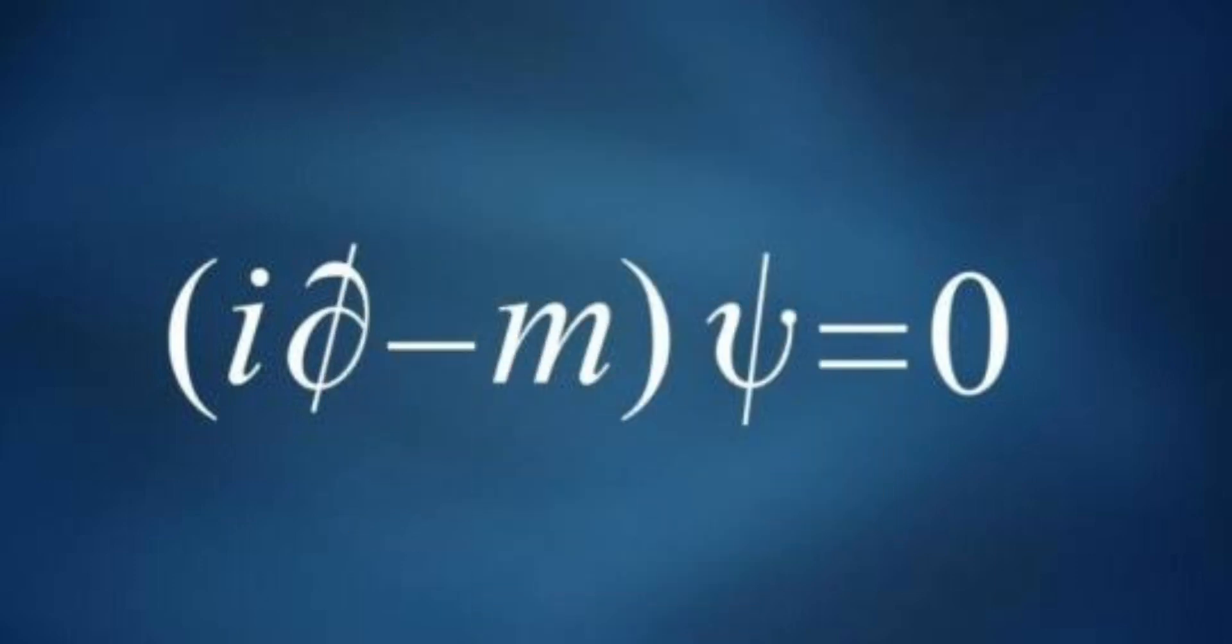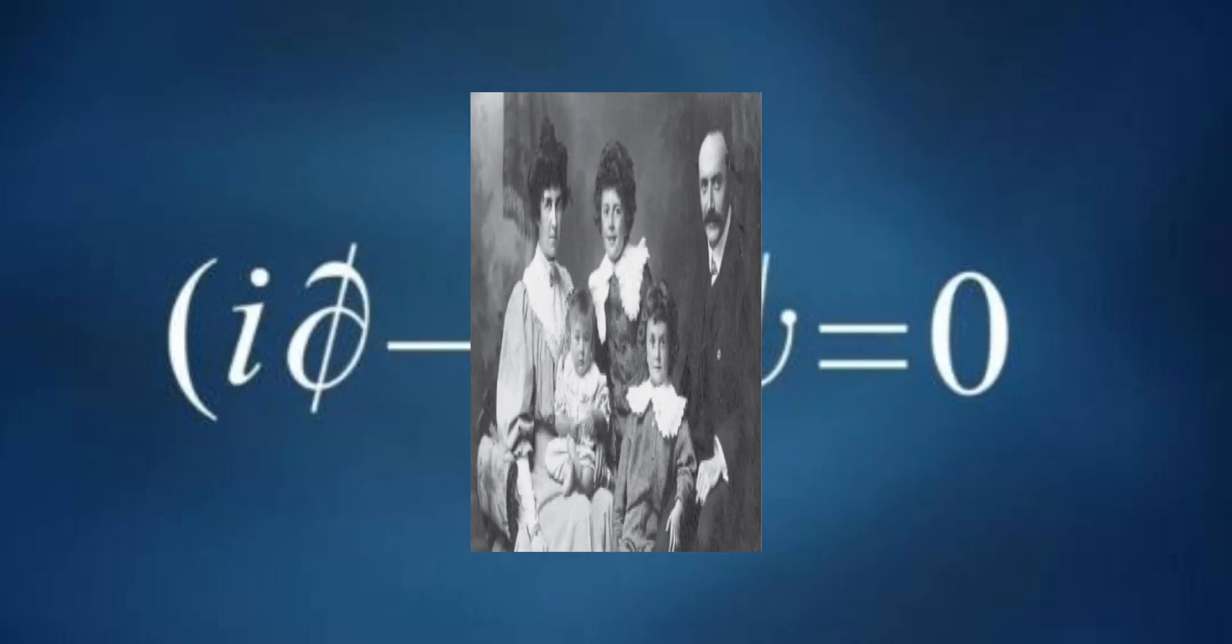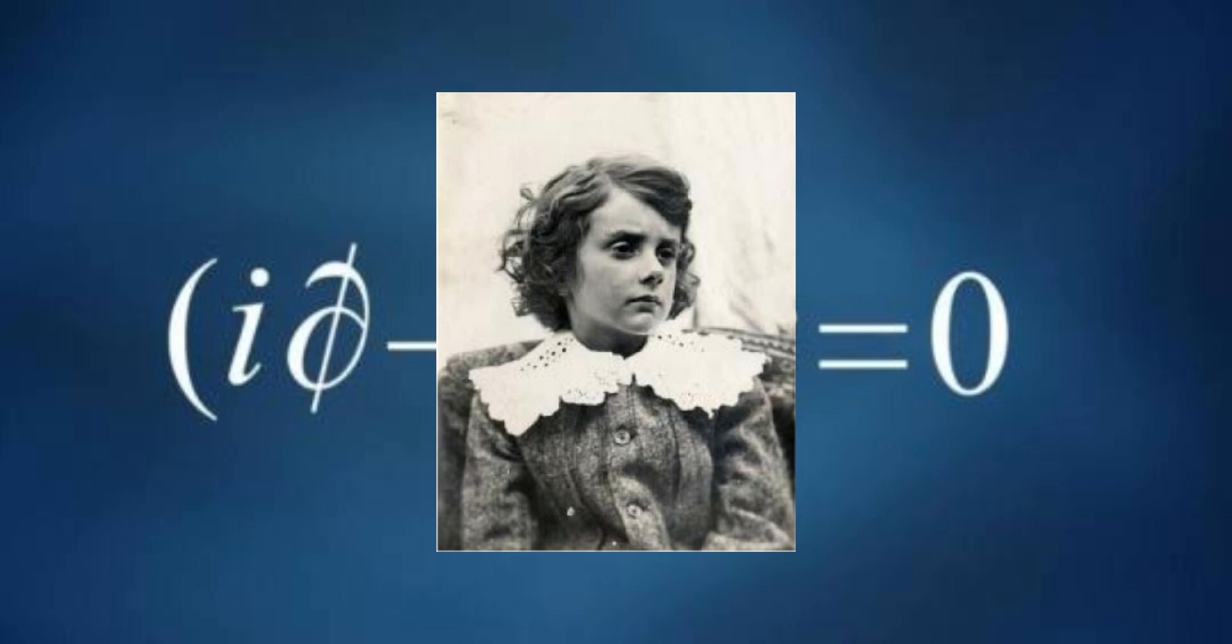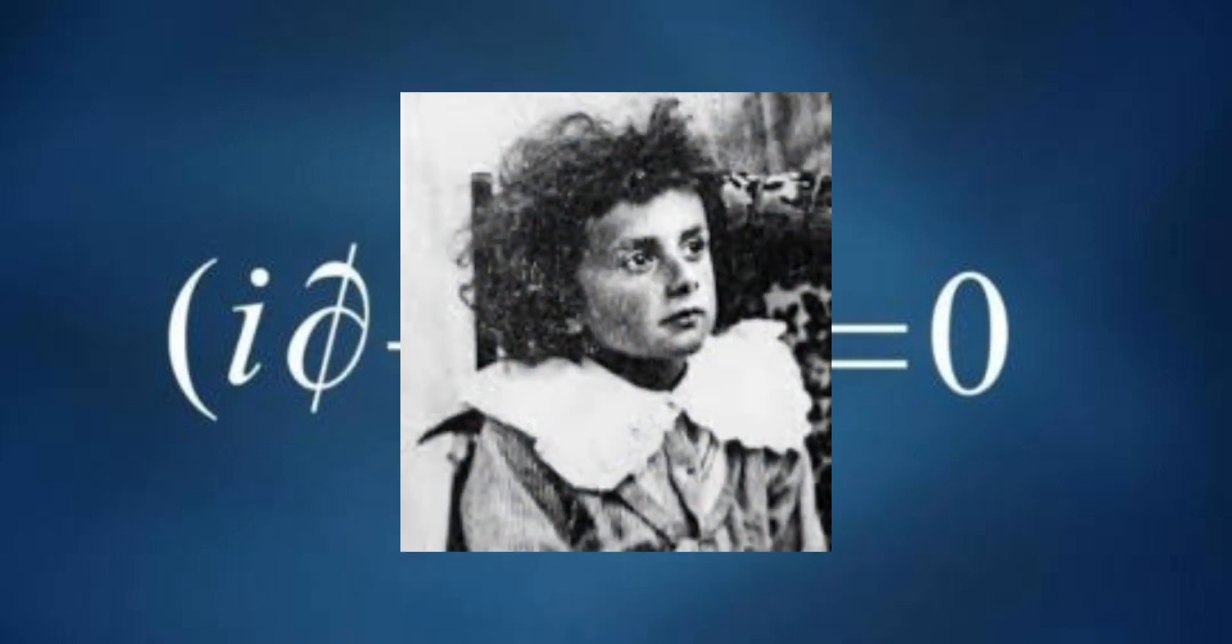Growing up in a multicultural environment, Dirac's upbringing provided him with a unique perspective that would later influence his scientific thinking. It is said that Paul's father forced him to speak only in French so that he would learn the language. This led to Paul being quite quiet when he could not find the French words to communicate with.